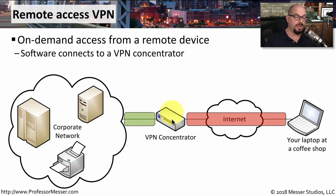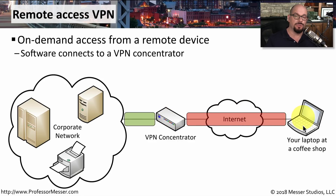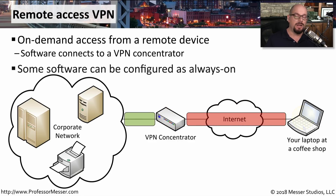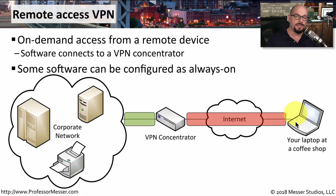The VPN concentrator decrypts that information and sends it into the local network. Any responses are also re-encrypted by the concentrator and sent back to the user on their laptop. It's very common these days to configure VPN software to be always on. So if you're outside the building, it recognizes you're on an external network and will automatically build the tunnel back to the VPN concentrator, ensuring you always have a secure channel back to the central office.